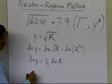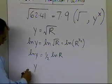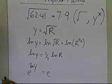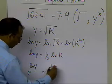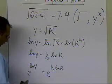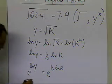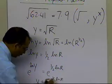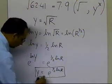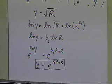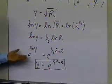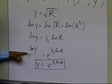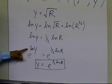Then you take e to the power of both sides. e to the power of log of y equals e to the power of one-half log of r. Since e to the power of log of y is just y itself, you get y equals e to the power of one-half log of r. That's how you find the square root of a positive number — by taking the log of both sides and then taking e to the power of both sides.